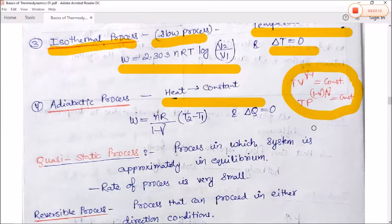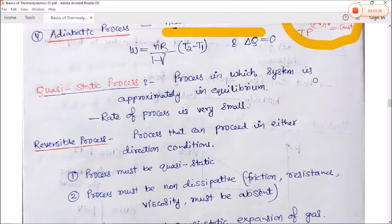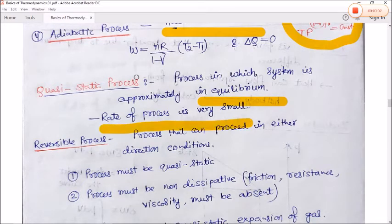Our main focus is to clear all the basics of thermodynamic processes so that our understanding of statistical mechanics becomes clear. The quasi-static process is a process in which the system is approximately in equilibrium at all times and proceeds very slowly; this is called a quasi-static process.